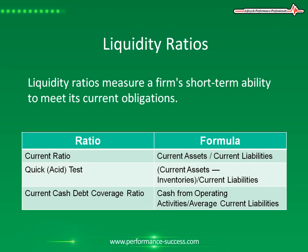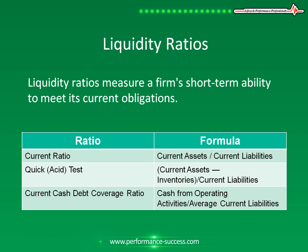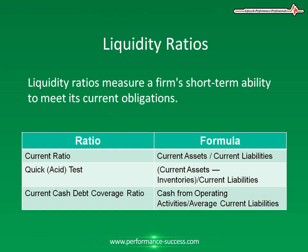Liquidity Ratios. Liquid assets are those that can be converted into cash within one year, while current liabilities are those that are due within one year. Accordingly, liquidity ratios measure a firm's short-term ability to meet its current obligations. There are three common liquidity ratios.